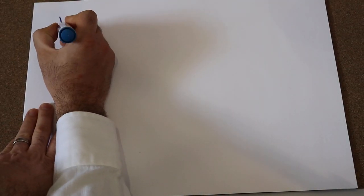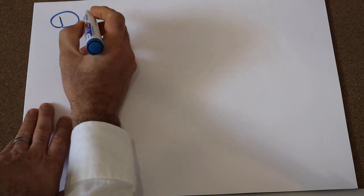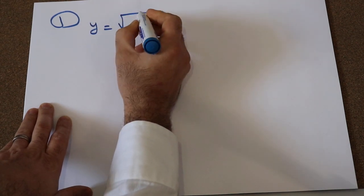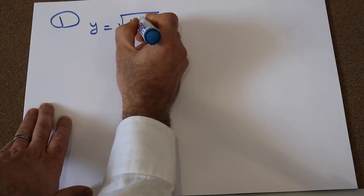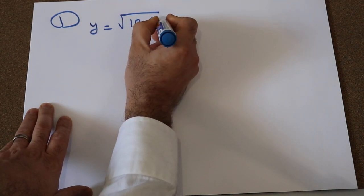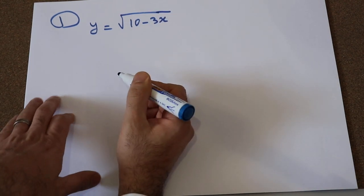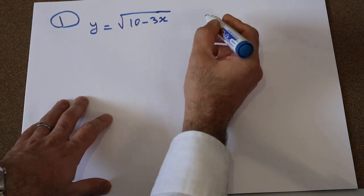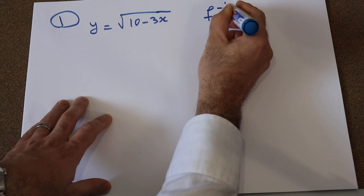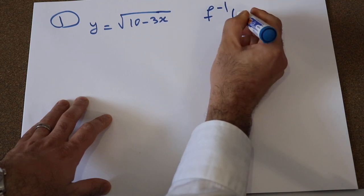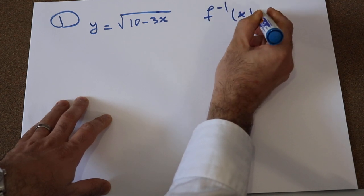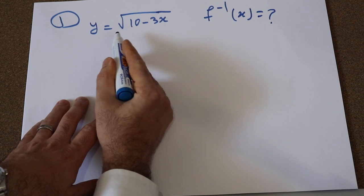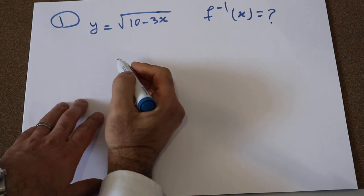So let's look at example number one. Let's assume y is equal to the square root of 10 minus 3x. The question is: what is the inverse of this function, which is represented by f⁻¹(x)? So how do we calculate the inverse of this function?